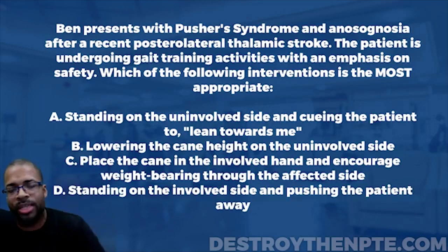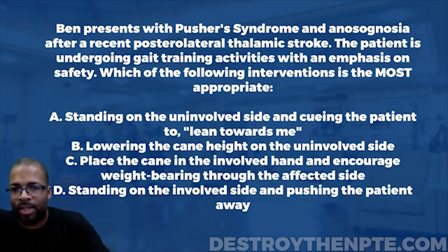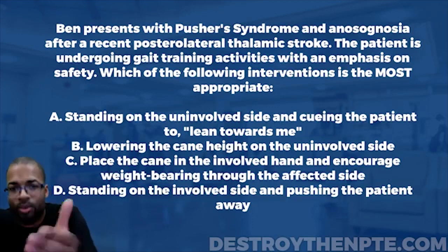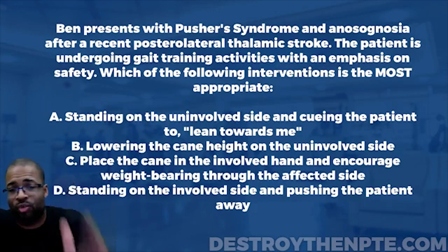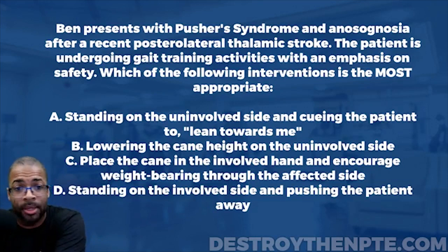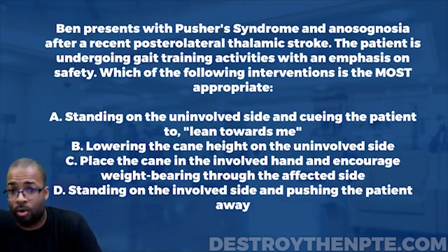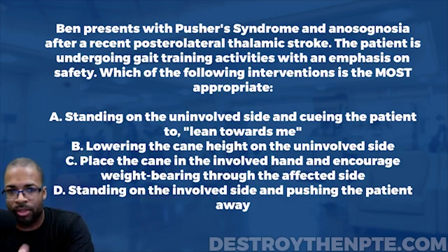As a clinician, you can see that this patient is leaning too much to their affected, weaker side, which produces a high risk for falls because that side is weak and they can't recover as easily. But this patient has no idea — they feel like they are straight up and down. The question also mentions anosognosia, which is a condition where the patient doesn't even perceive that they have a problem. They lack self-awareness and can't realize they have pusher syndrome, a stroke, or any deficits.